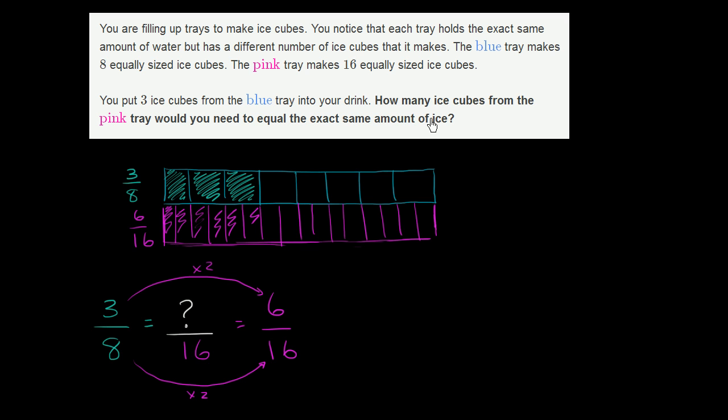So to answer the question, how many ice cubes from the pink tray would you need to equal the same amount of ice? Well, you would need six cubes.